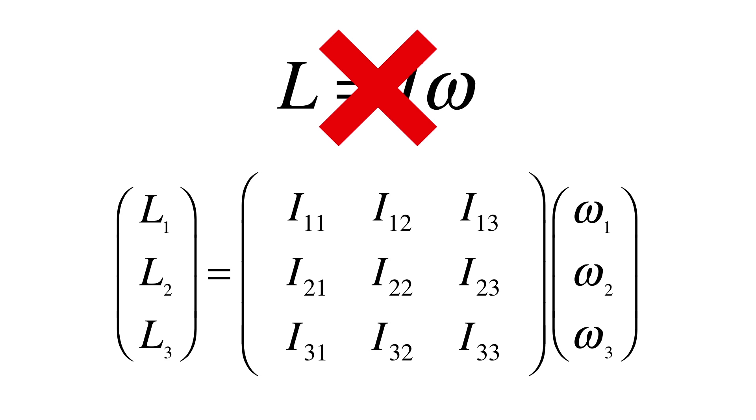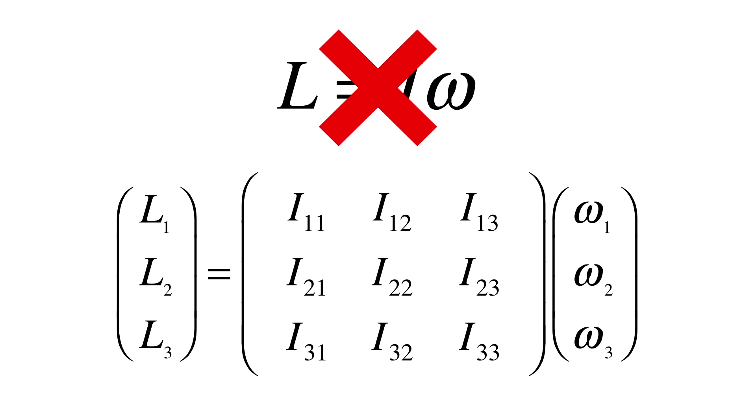For example, we can imagine this product of inertia as the x-component of angular momentum when the angular velocity is in the z-direction.